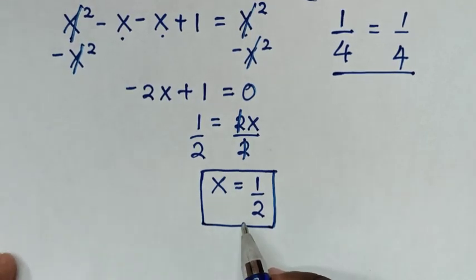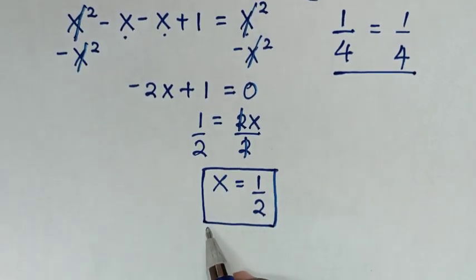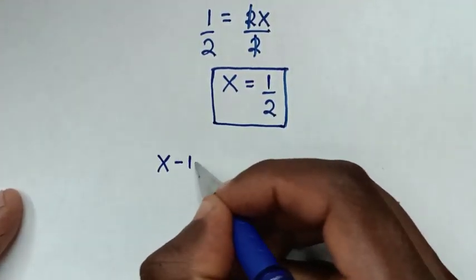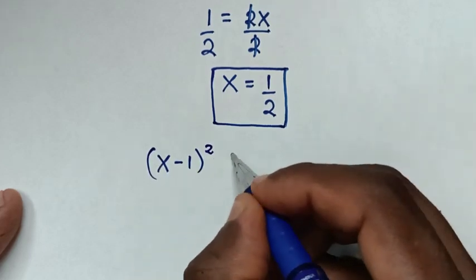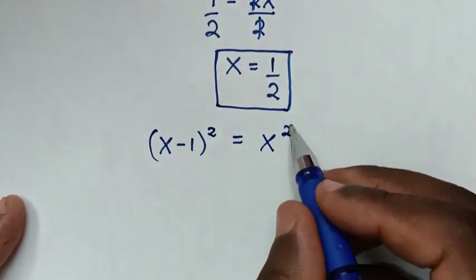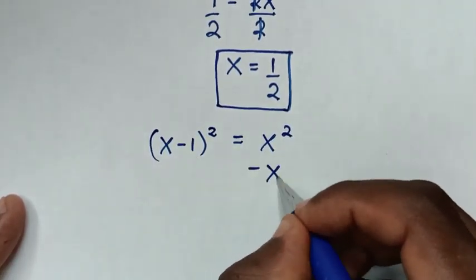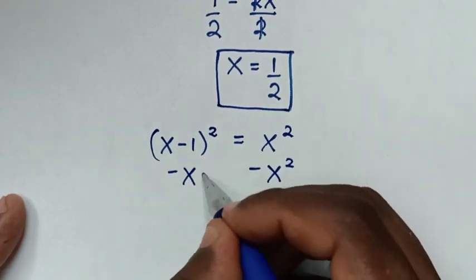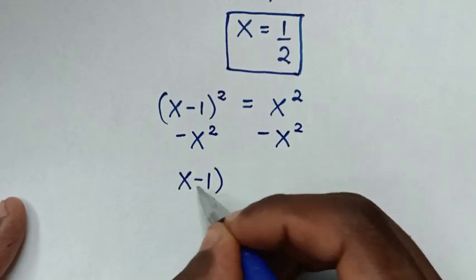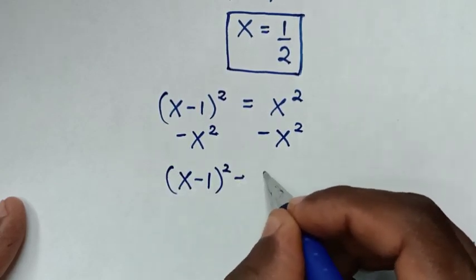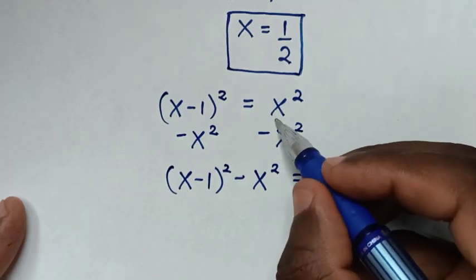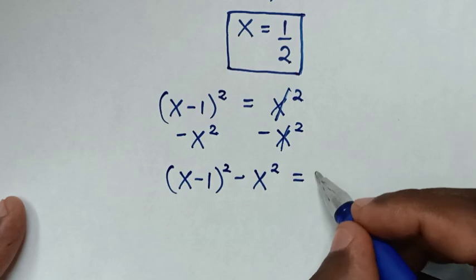To solve in another way — the second method — from our problem (x minus 1) bracket squared equals x squared, we move x squared to the left side by subtracting x squared from both sides. So it becomes (x minus 1) squared minus x squared equals 0.